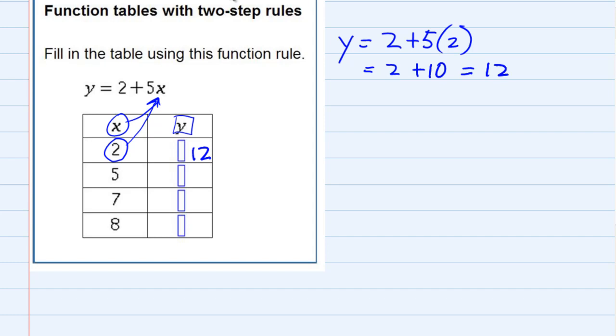And then we can move down to the other values of x. If I were to plug in the 5, that would be y equals 2 plus 5. This time, I'm replacing the x with a 5, so again, doing the multiplication first, that's 2 plus 25, which is 27. That would be my y value here.